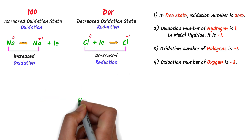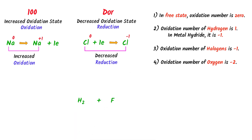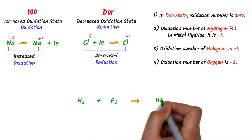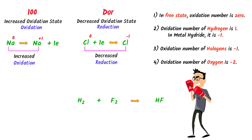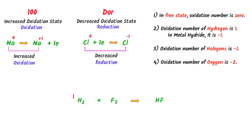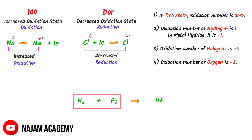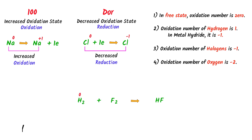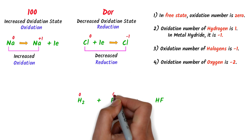Finally, consider hydrogen gas plus fluorine gas combining together to form hydrogen fluoride. Pause the video and try to solve this reaction. Hydrogen is in the free state and fluorine is also in the free state. So the oxidation state of hydrogen gas is zero and the oxidation state of fluorine gas is also zero.